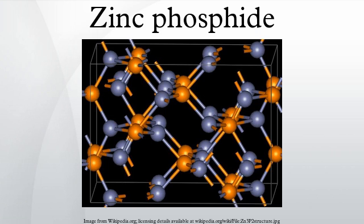Metal phosphides have been used as rodenticides. A mixture of food and zinc phosphide is left where the rodents can eat it. The acid in the digestive system of the rodent reacts with the phosphide to generate the toxic phosphine gas. This method of vermin control has possible use in places where rodents are immune to other common poisons.